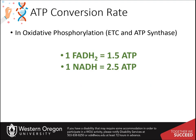The other bit of information needed is the conversion rates for the electron carriers FADH2 and NADH. When they drop off their electrons in the electron transport chain, one molecule of FADH2 can generate enough proton potential to make 1.5 ATP, while 1 NADH can generate 2.5 ATP. Note that these rates take into account the cost of transporting ATP out of the matrix of the mitochondria once it is made.